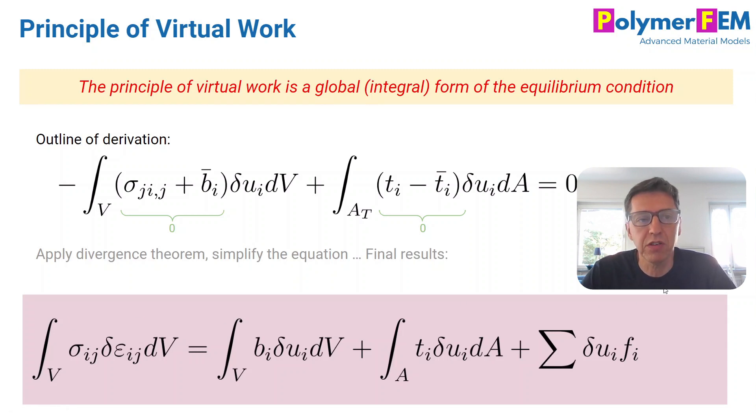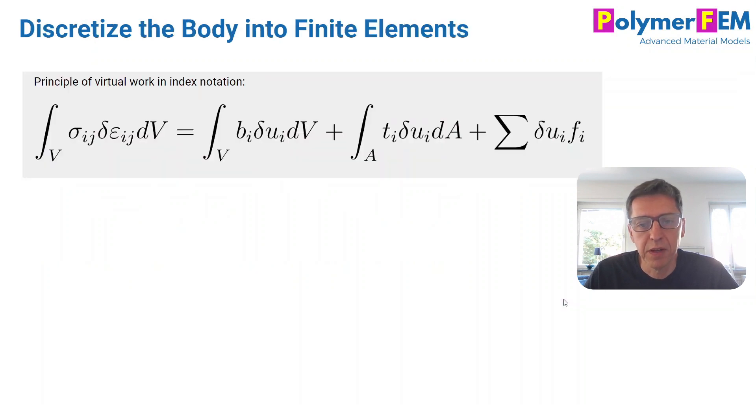You can show—and I'm not going to do it here today just to save time—that you can show this equation at the bottom, which is the equation of virtual work. You can see that this is a volume integral over stress times this virtual strain field that comes from the virtual displacement field, and b is the body force, this is the displacement field, this is surface traction, and this has point forces.